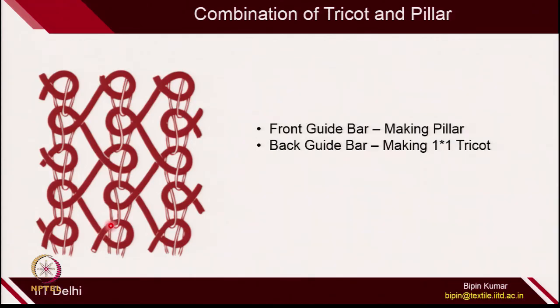Let's see some combinations of fabric which can be generated. There are 2 guide bars providing yarn to each needle. The front guide bar is making pillar construction, and the back guide bar is making 1 cross 1 tricot. This is one of the simple 2 bar constructions where you are combining tricot and pillar together.